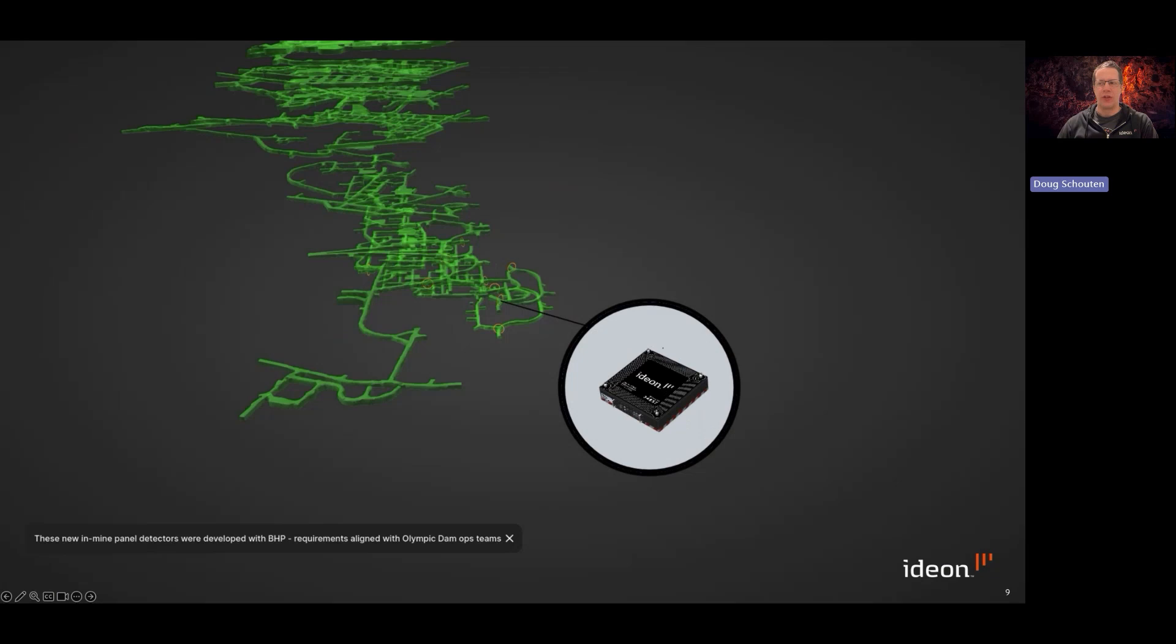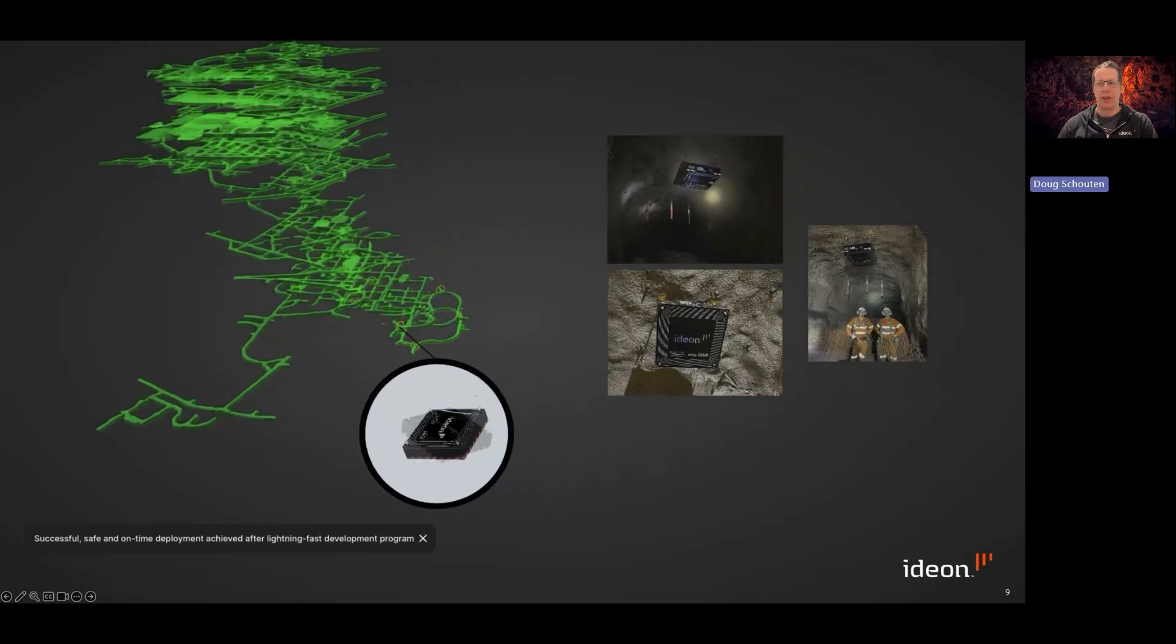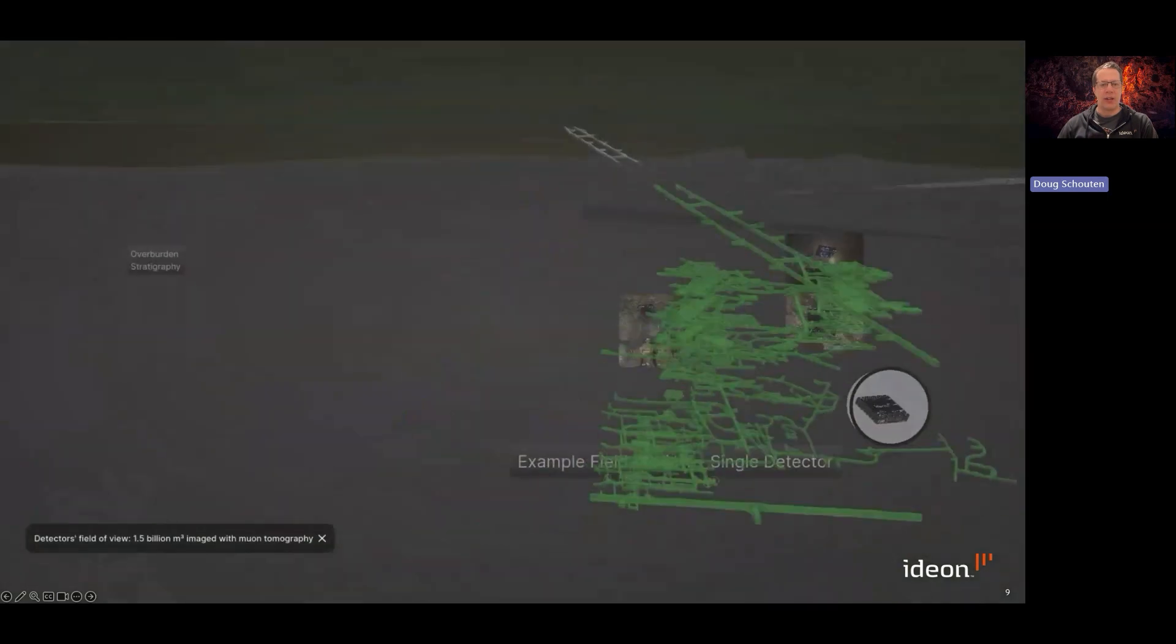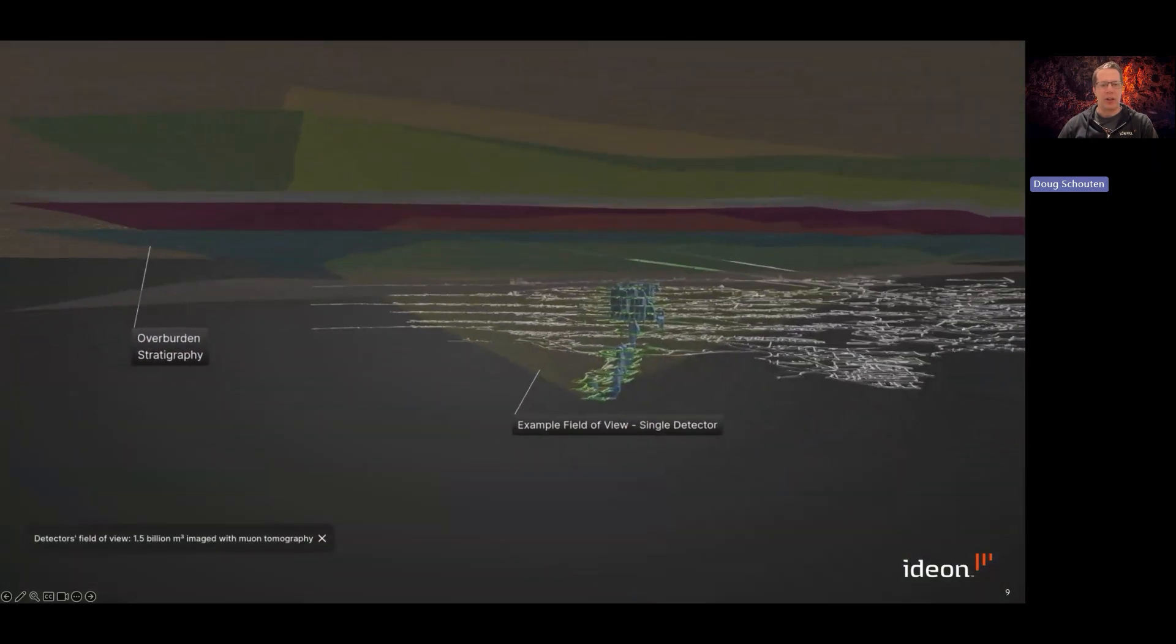And we deployed our advanced muon sensors in an electromagnetically noisy and very complex busy mining environment. We deployed 15 of our panel detector locations in various locations in the Greens. And safe, on-time, and successful deployment at Olympic Dam could not have been possible without the amazing on-site support of Think and Act Differently powered by BHP and the Olympic Dam site teams.